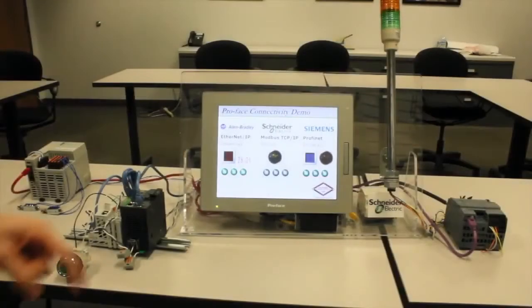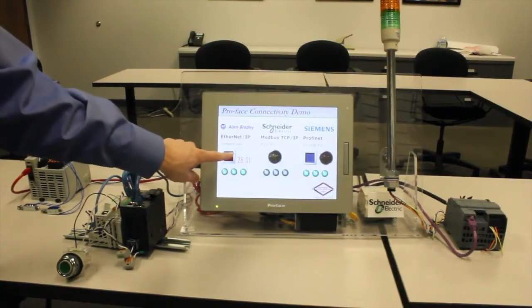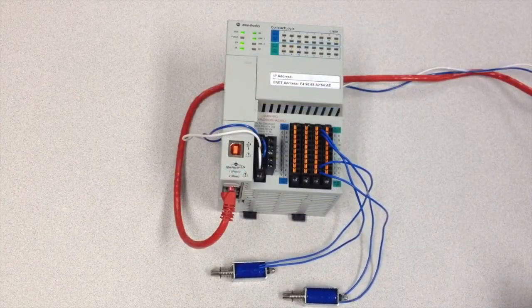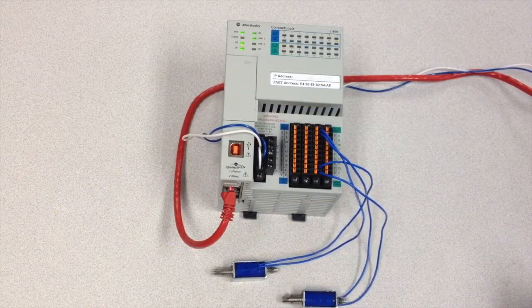Now if I go ahead and select the Ethernet IP button here it begins toggling these solenoids. These are basic 24 volt solenoids connected to the CompactLogix outputs.